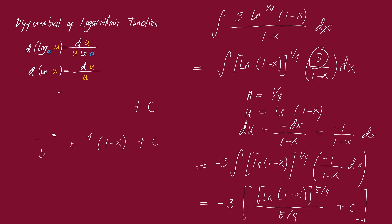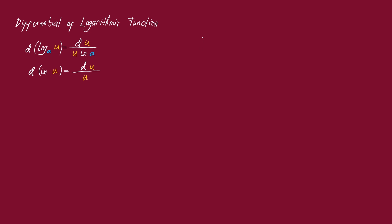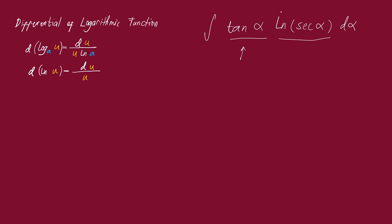Let's have another example. Suppose we have the integral of tangent of alpha multiplied by the natural logarithm of secant alpha, d alpha. If you want to apply the power formula, since there are two factors — tangent of alpha and the natural logarithm of secant alpha — you have to choose which one to use as u. We cannot use tangent alpha as u because its derivative does not involve a logarithmic function.